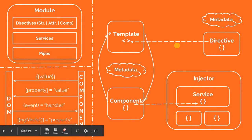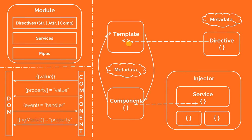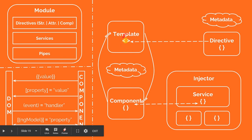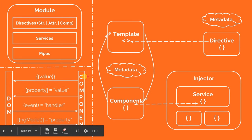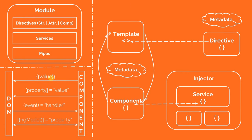There are four types of interactions between the component class and the Document Object Model. The first one is string interpolation, which is one-way from the component class to the DOM. If you have a property named value on the component and you want to display it on the template, you can wrap it inside curly braces to get it displayed onto the DOM.